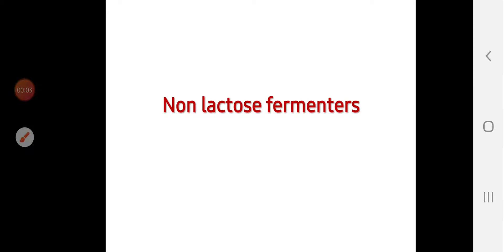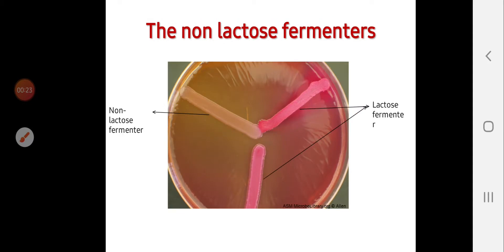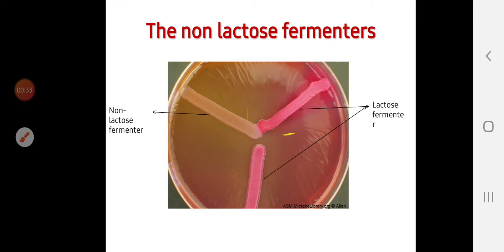The second part of our lecture today is about non-lactose fermenters. From their name, non-lactose fermenters will not ferment lactose, so we expect that they will produce colorless or pale color colonies on MacConkey's agar. Non-lactose fermenters produce pale color colonies, while lactose fermenters will produce rose pink color colonies on MacConkey's agar.